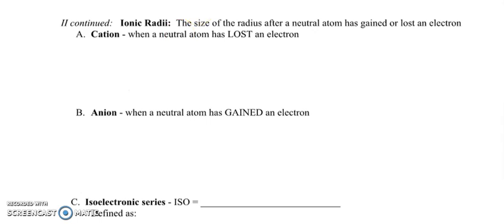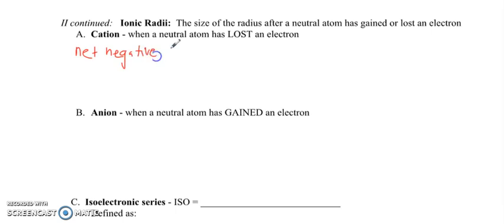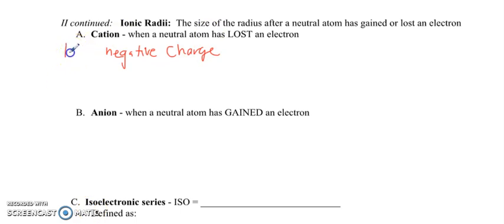Let's go through and actually define them. A cation is when a neutral atom has lost an electron — and I said it backwards, don't write that. We didn't have a net negative charge; we've lost a negative charge. So if we subtract a negative, as in math class, what do we get? We get a positive.